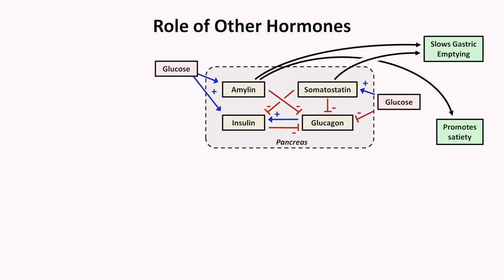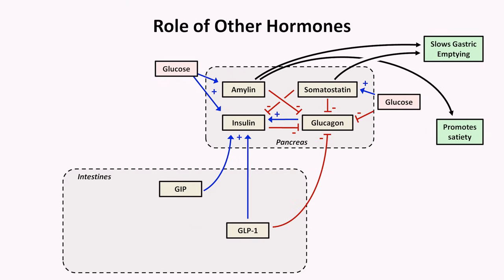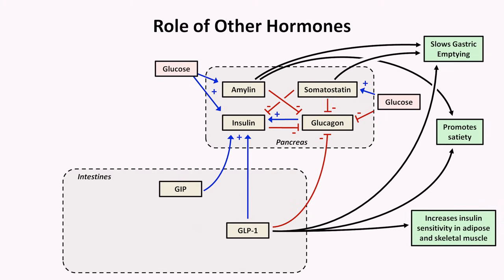Moving beyond the pancreas, there are two important hormones secreted by the gut. The first is called GIP, which originally stood for gastric inhibitory polypeptide. Because it has since been learned that it has minimal gastric inhibitory properties, it has been renamed glucose-dependent insulinotropic polypeptide — a great example of a backronym in which the full name is created after the fact to conform with a pre-existing acronym. GIP is secreted by K cells located mostly in the duodenum and upper jejunum, and its major role is to promote insulin secretion. There is also the more important GLP-1, which stands for glucagon-like peptide, which also stimulates insulin release and inhibits glucagon release, as well as slowing gastric emptying, promoting satiety, and increasing insulin sensitivity in adipose and skeletal muscle.